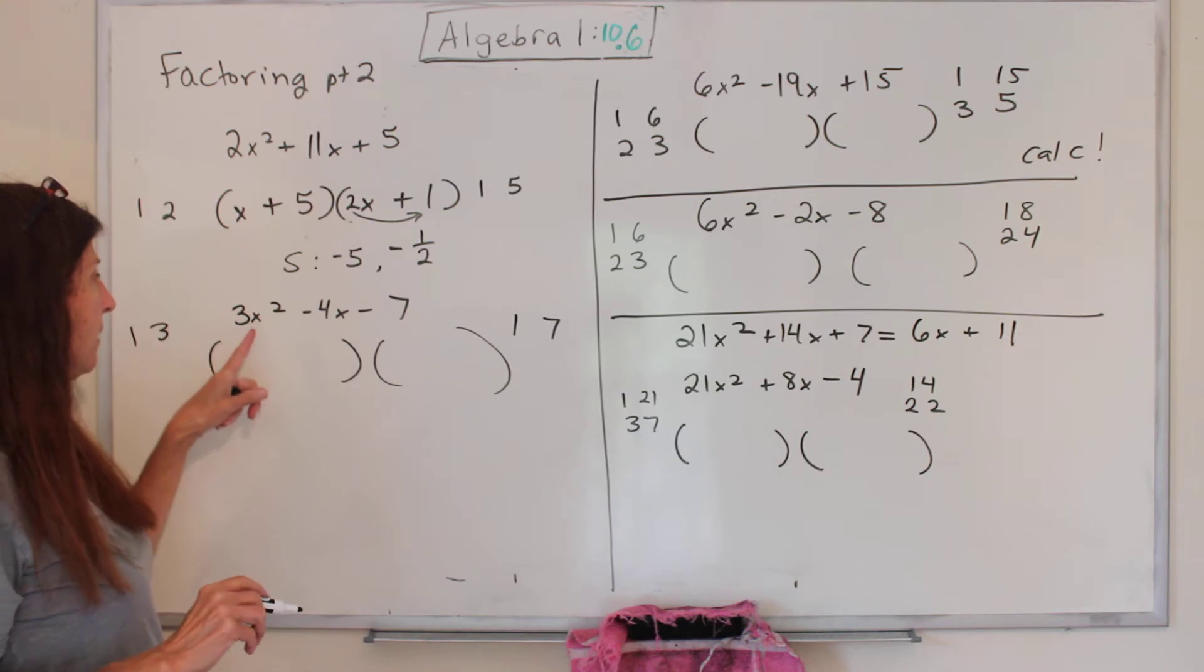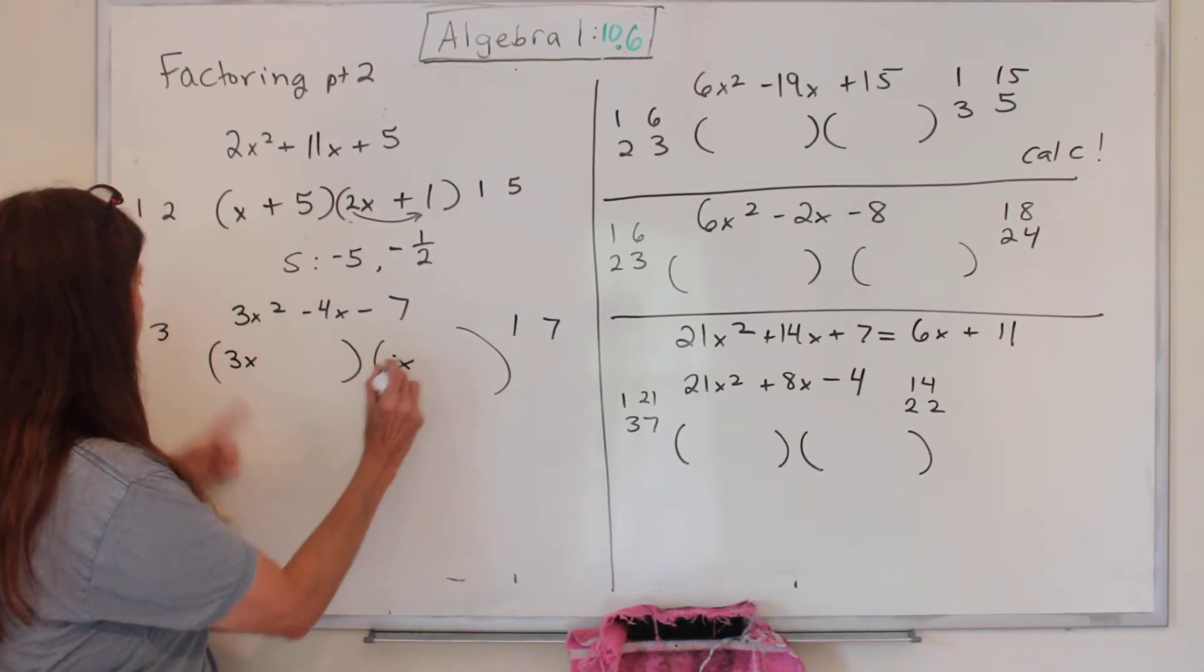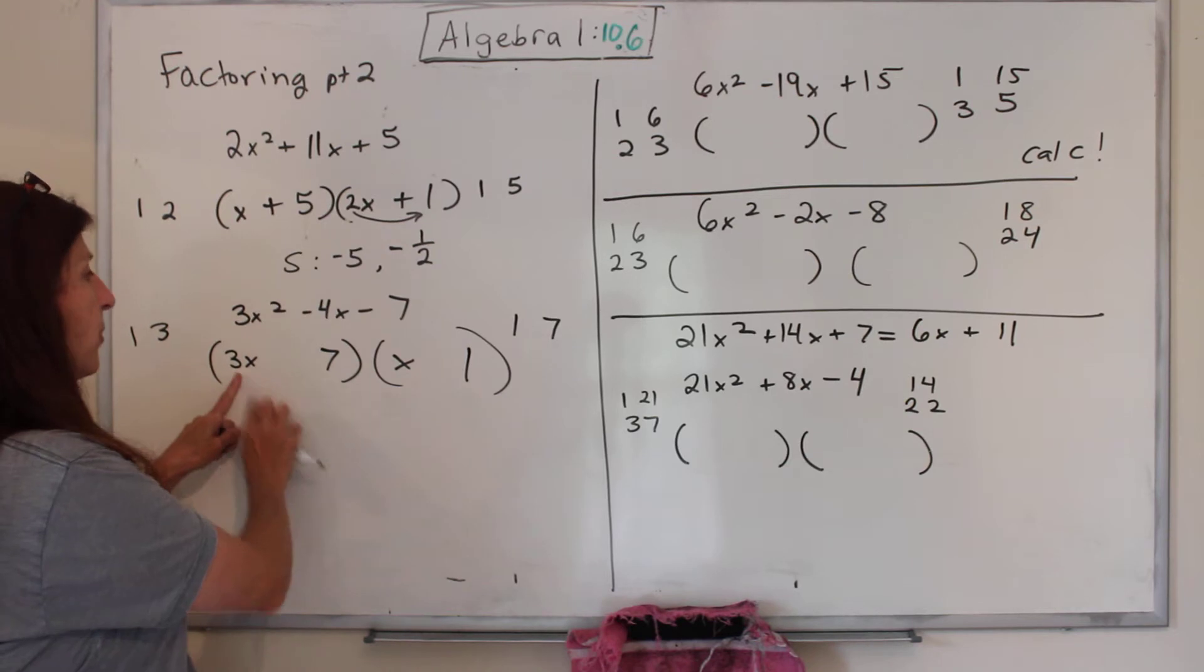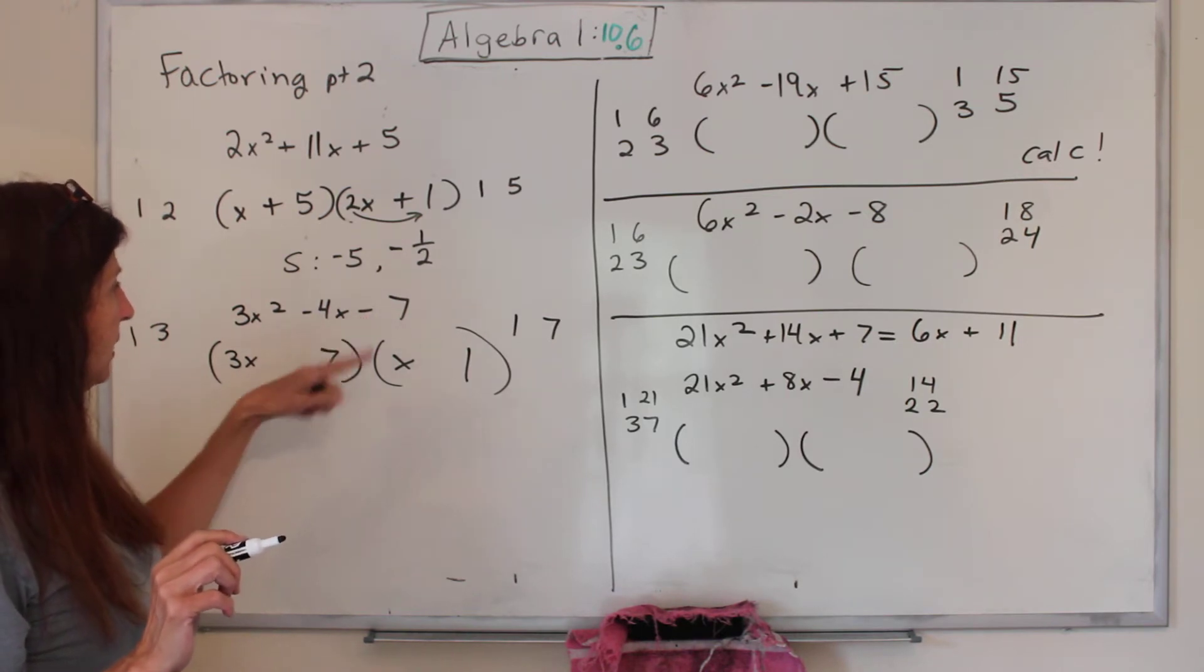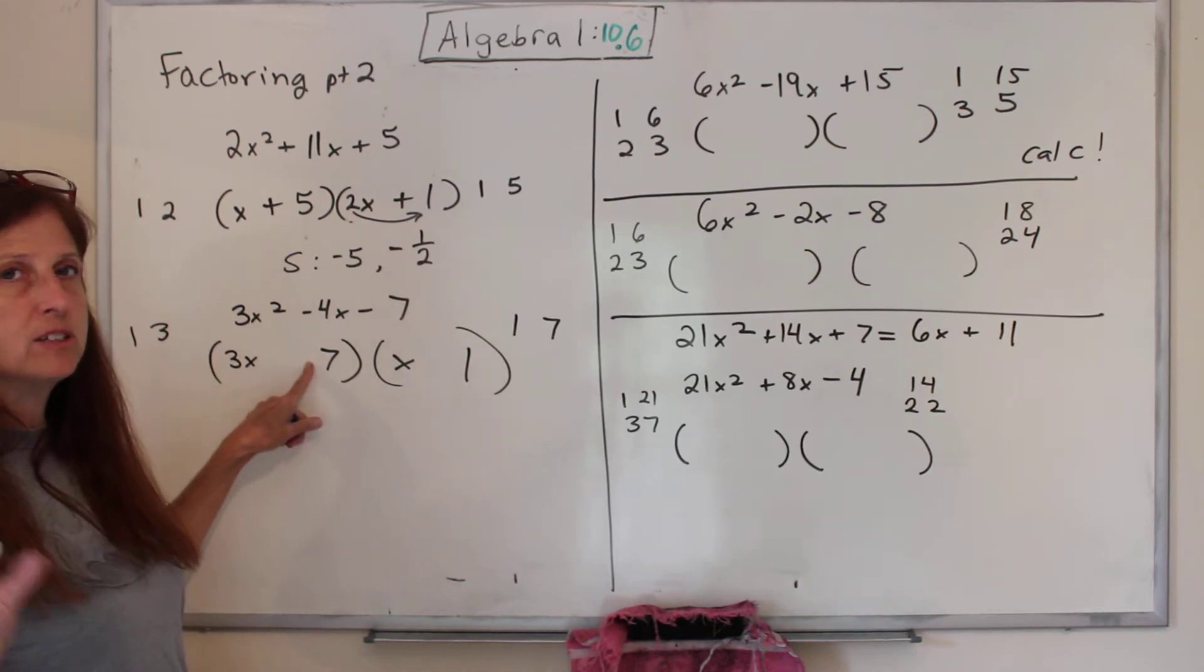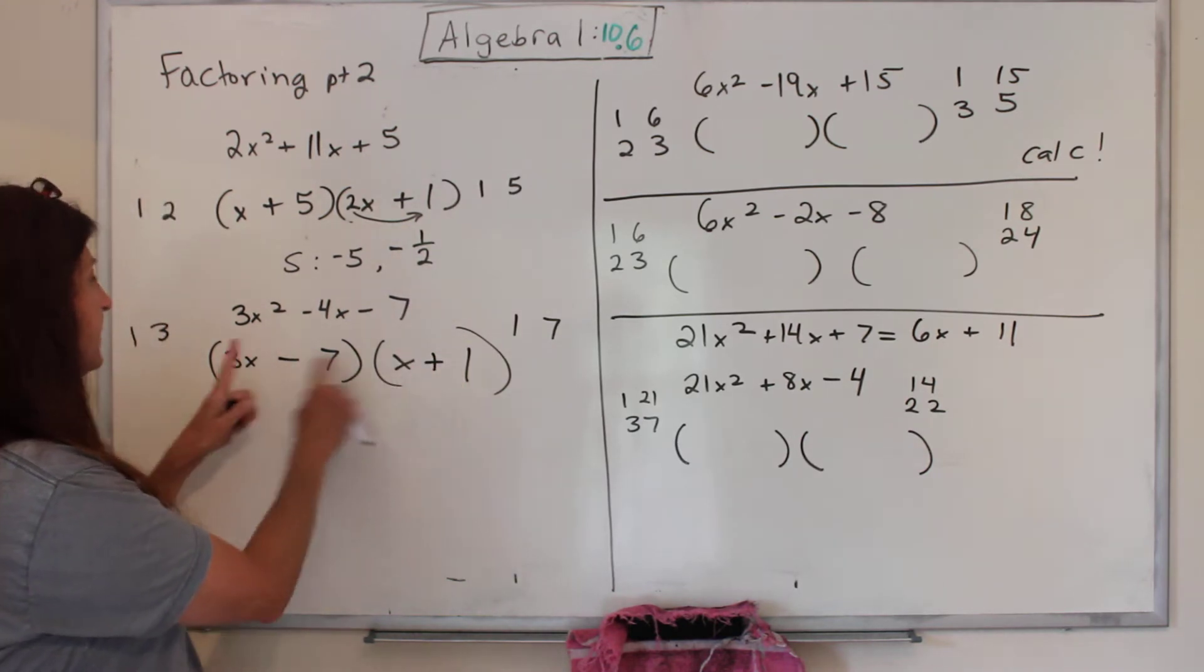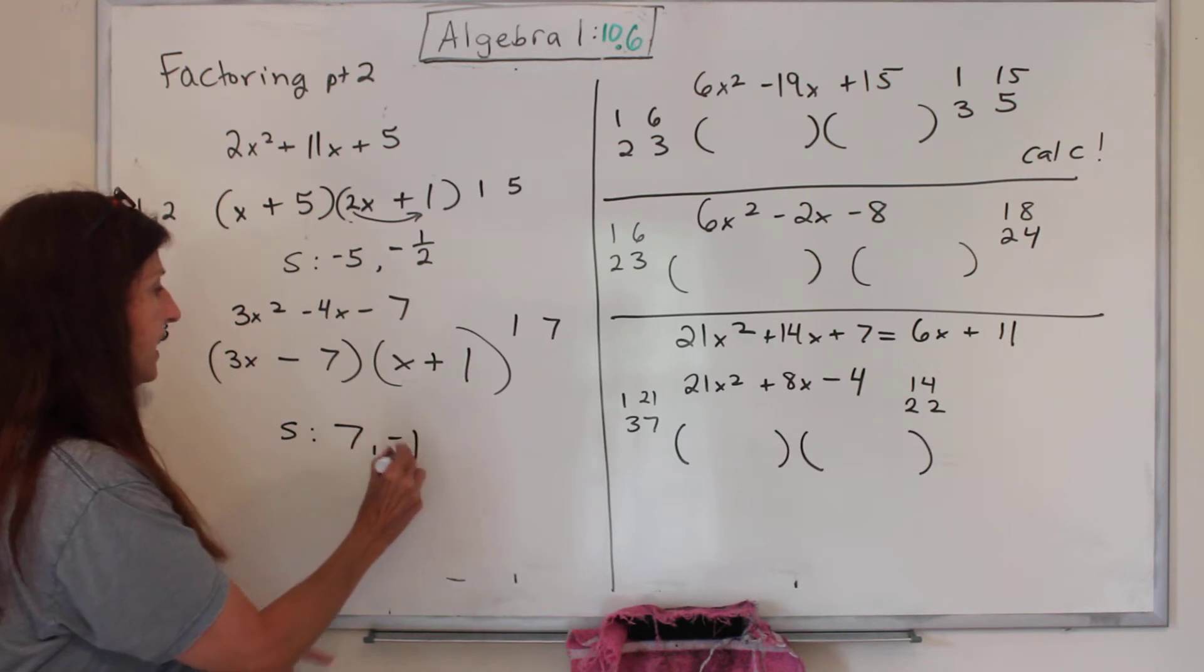So let's do this one. The factors of 3 are 1 and 3. The factors of 7 are 1 and 7. So I'm going to try 3x and x for my 1 and 3, and then for 7 I'm going to try 7 and 1. Let's see, we're trying to get 4. This is 3 and that's 7. Can 3 and 7 be added or subtracted to get 4? Yes, they can. So now let's look at the signs. That needs to be negative. That needs to be negative. So that being negative means one's positive and one's negative. That 7 is pretty big and we usually go with the biggest term, so I'm going to make 7 the negative. And then I'm going to make this one the positive. So this is negative 7 plus 3, that's negative 4. So we got it.